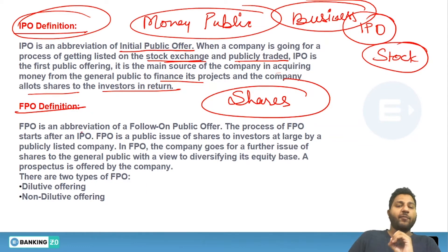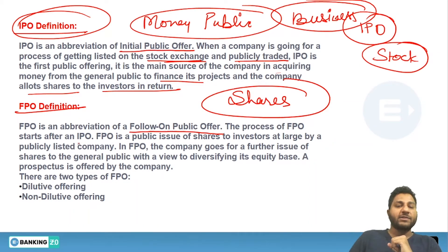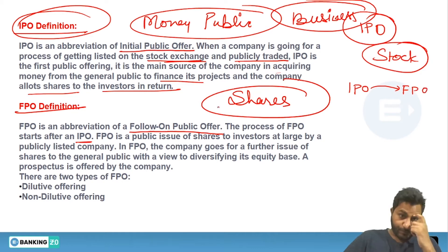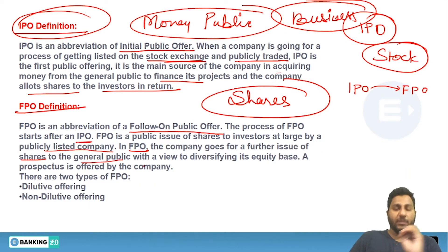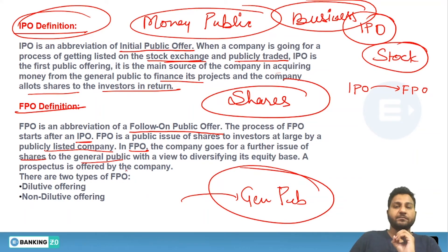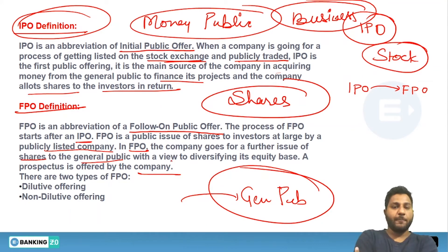FPO is an abbreviation of Follow-on Public Offer. The process of FPO starts after IPO. FPO is a public issue of shares to investors by a publicly listed company. In FPO, the company goes for a further issue of shares to the general public with a view to diversifying its equity base. A prospectus is offered by the company. There are two types of FPO: dilutive offering and non-dilutive offering.